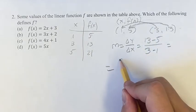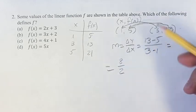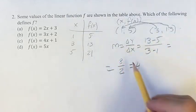Simplifying this, we have 13 minus 5 is 8. 3 minus 1 is 2. 8 divided by 2 is 4, so your slope is 4.